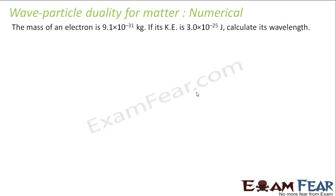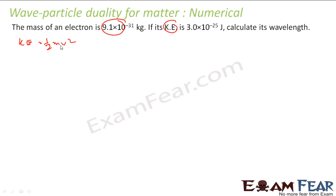The mass of the electron is 9.1×10⁻³¹ kg; if the kinetic energy is given, find the wavelength. I know that kinetic energy = ½mv². I have the mass and kinetic energy, so I can find velocity. Wavelength is h/mv, and since I have velocity I can find λ. From the first equation, v = √(2 KE / m).